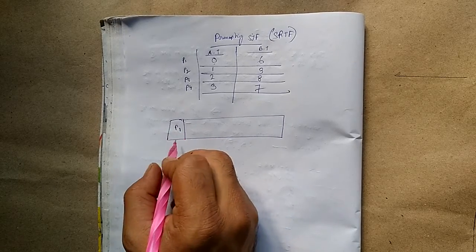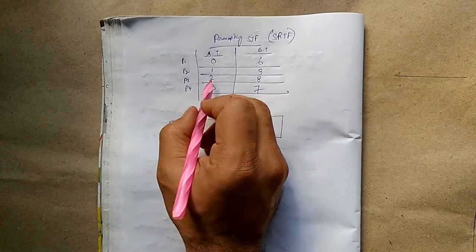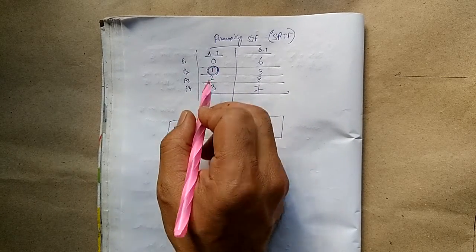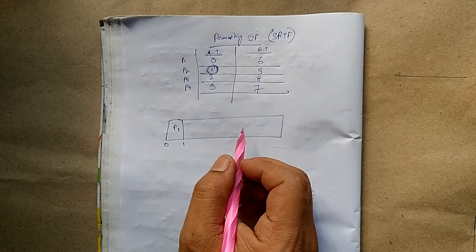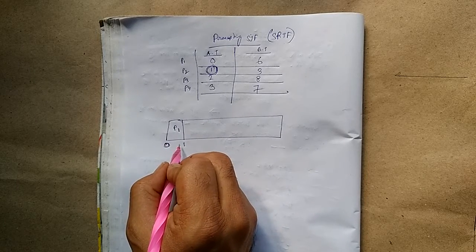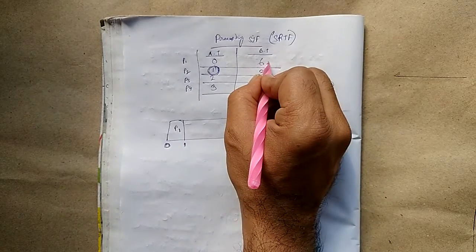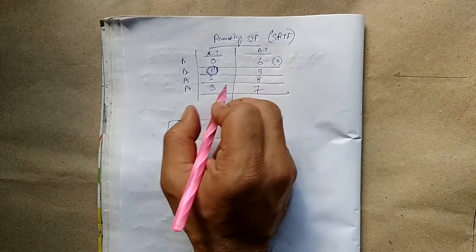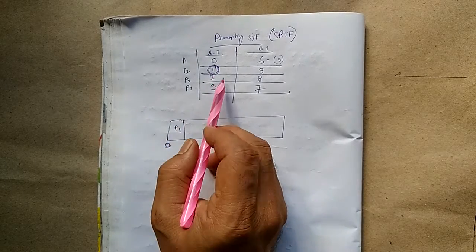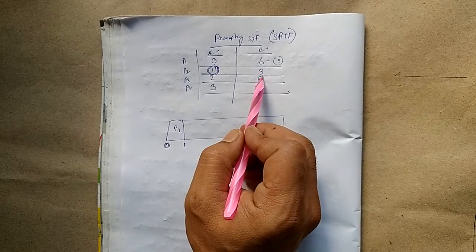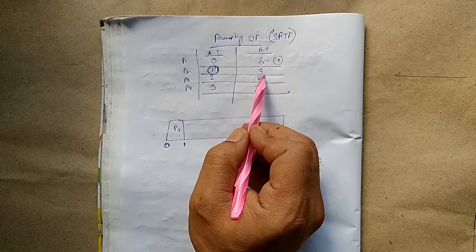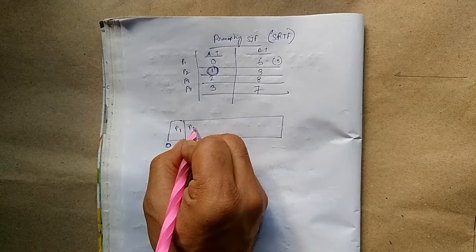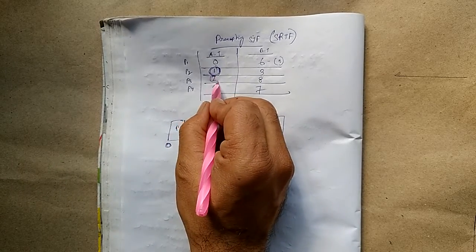We will run process P1 from 0 to 1, because at time 1, process P2 is coming. So we will run process P1 for 1 second, and its burst time will be 6 minus 1, which is 5. At time 1, there are 2 processes: one process burst time is 5, another process burst time is 3. So we will select process P2.